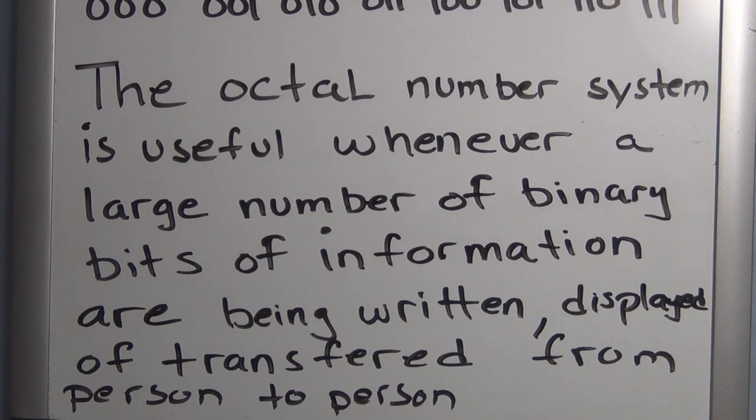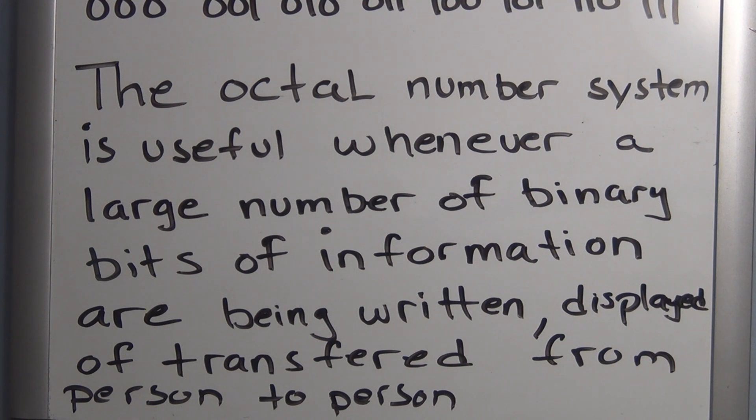So one of the main advantages of the octal number system is it's useful whenever a large number of binary bits of information are being written, displayed, or transferred from person to person, whether verbally or in writing, or displayed in some form. It makes it just easier to comprehend instead of the binary information. It's more compact, less prone to error.